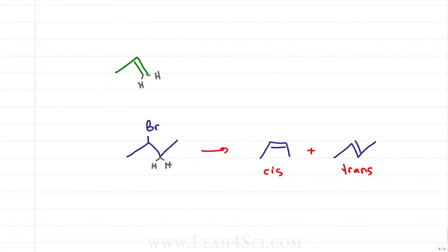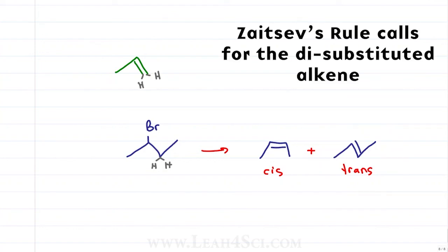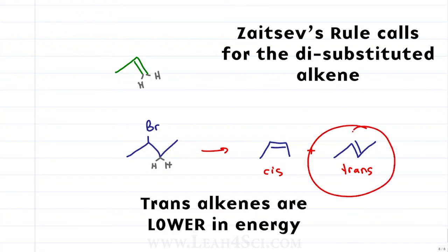As I teach in the E2 videos, the trans alkene is the major product because it's more stable. And if you were to draw this on the reaction energy diagram, you would show the trans alkene at a much lower energy than the cis alkene to demonstrate the fact that trans is definitely more stable and therefore lower energy.